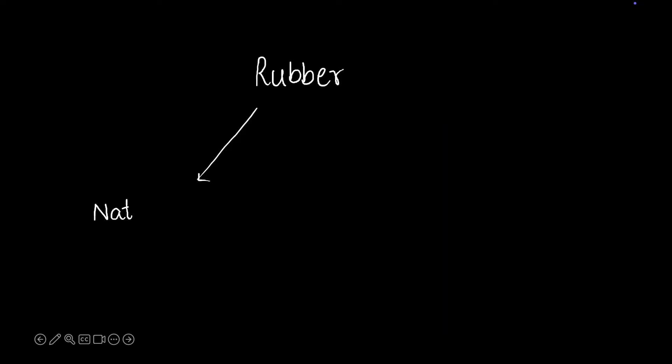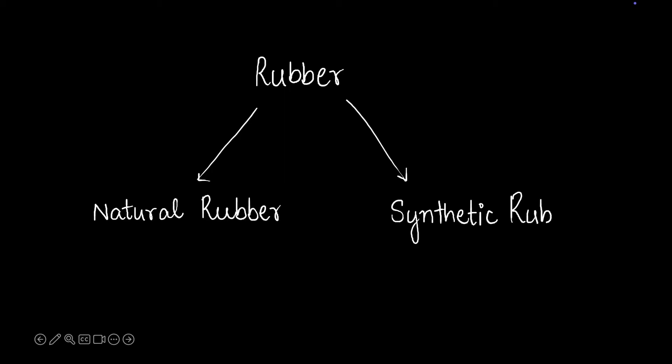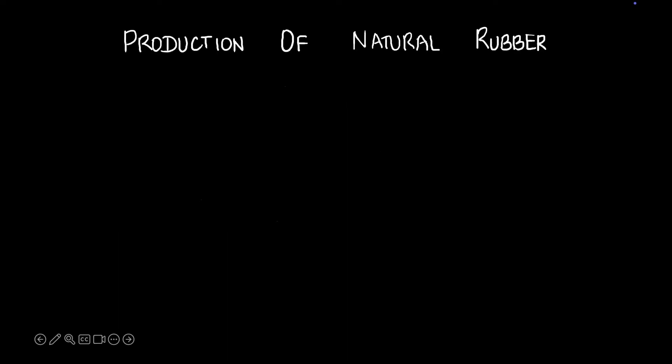Rubber has two main types: natural rubber and synthetic rubber. Synthetic rubber is made of chemicals — we're not going to discuss that. We'll be focusing on the production of natural rubber.